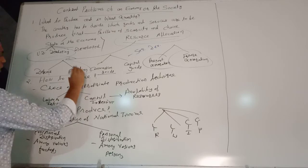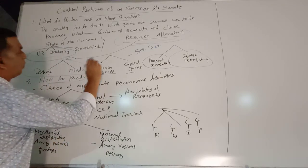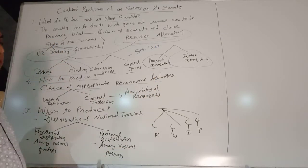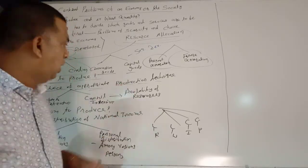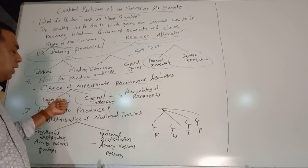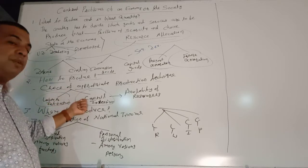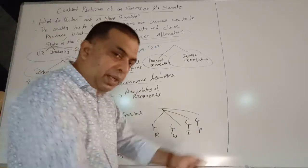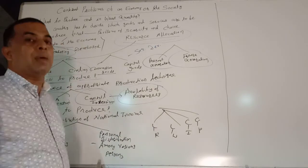The second problem is how to produce. Once it is decided what to produce, the second question arises: how to produce? This problem is associated with the choice of appropriate production technique — which technique should be used for production. There are two types of techniques: labour intensive and capital intensive. Labour intensive means more use of labour and less use of capital; capital intensive means more use of capital and less use of labour. Whether the country should use labour intensive or capital intensive technique depends on the availability of capital, human, physical, financial, and natural resources.